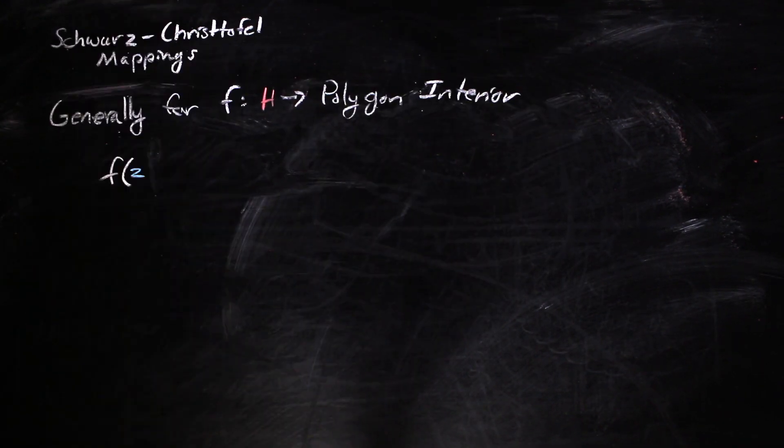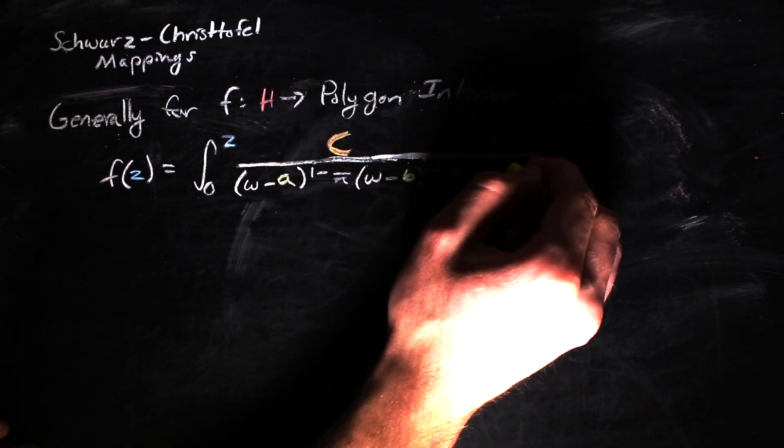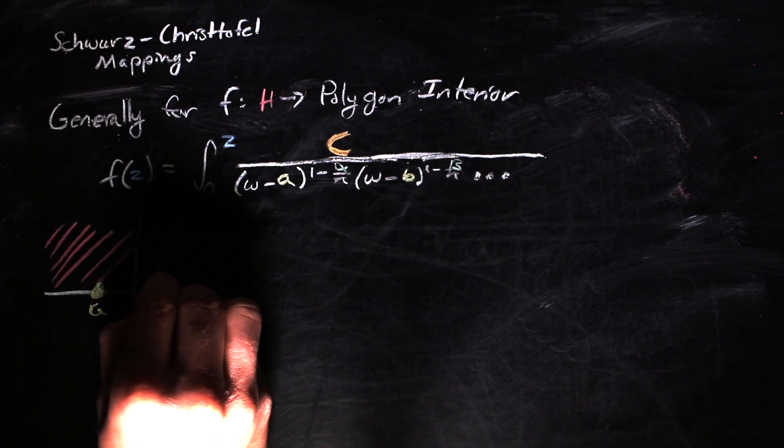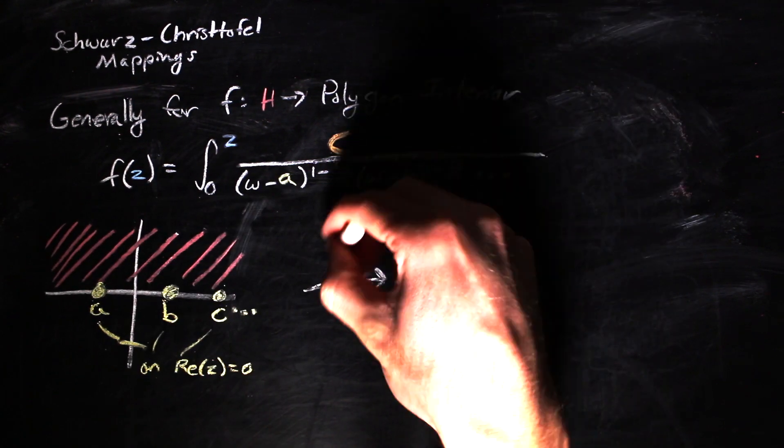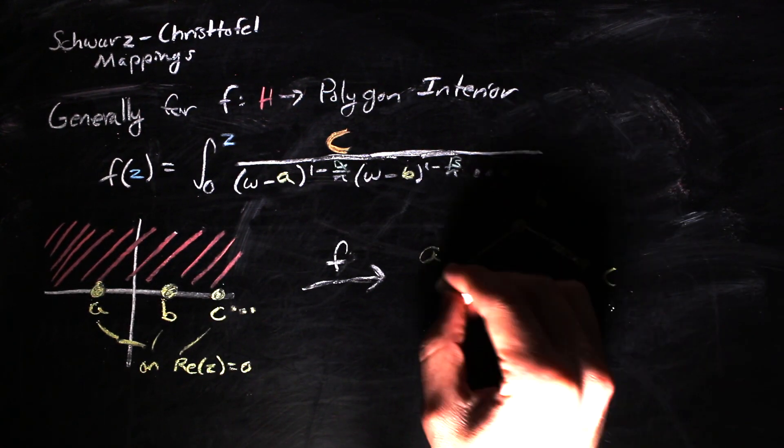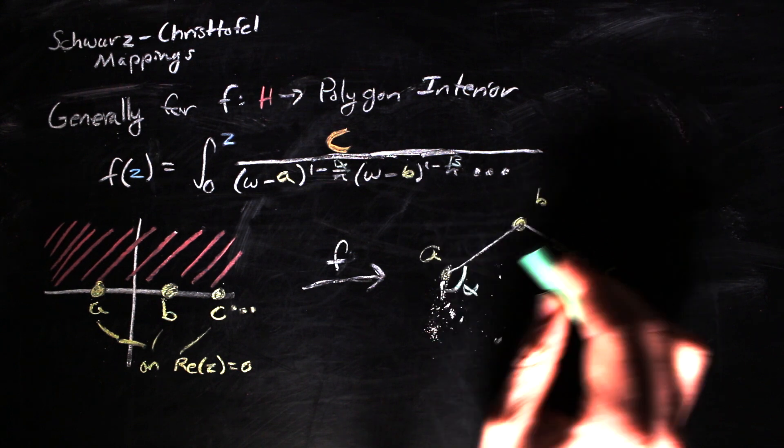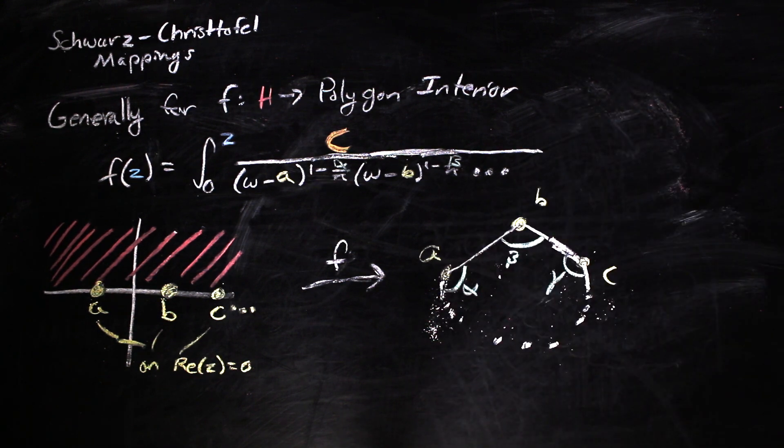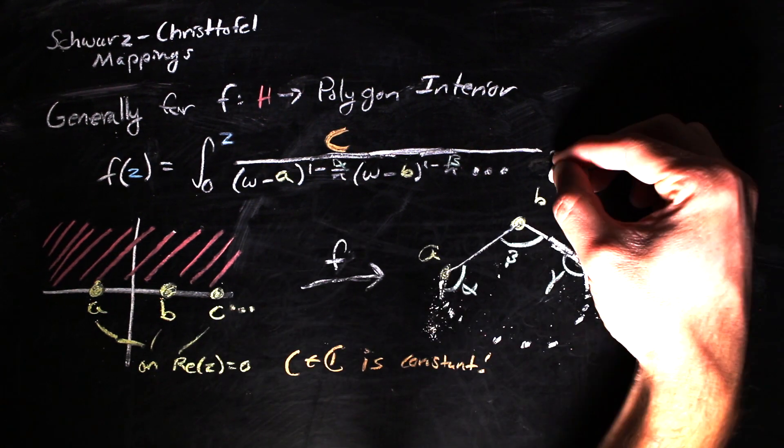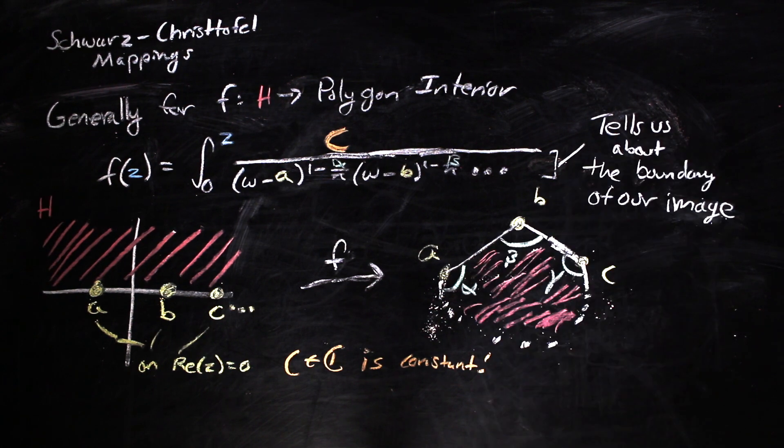In general, here is the equation for a Schwarz-Christoffel map for a region with a finite number of vertices. These ABC terms are values on the real axis that correspond to the vertices of the polygon, and the alpha, beta, gamma are all interior angles at these vertices in radians, and big C is just a constant.